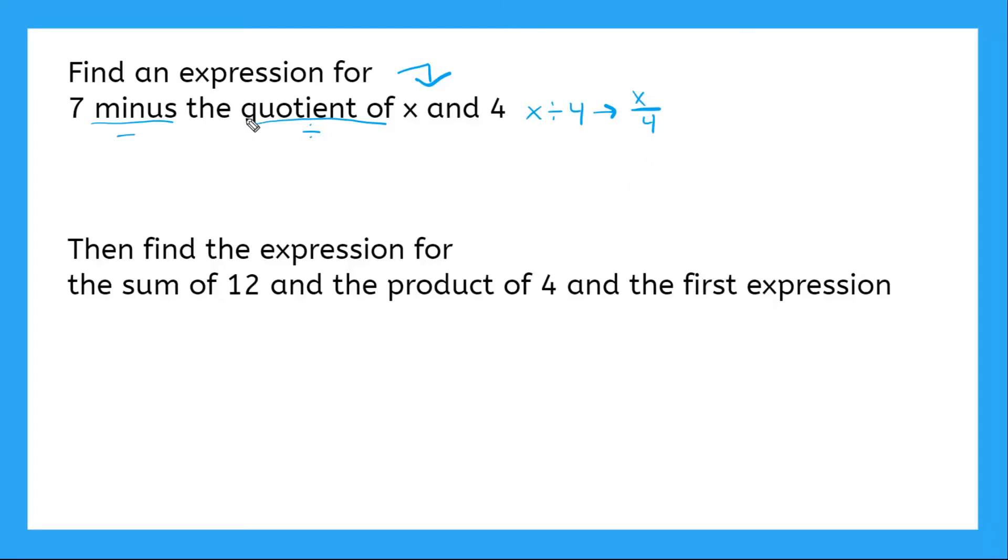Okay, so I know this here, the quotient of x and four is my fraction x over four. That's the same thing. So seven minus, seven minus the quotient of x and four, I plug in there x over four. Okay, this is expression number one, first expression right here. This is what this is talking about here. Okay, seven minus x over four. All right.